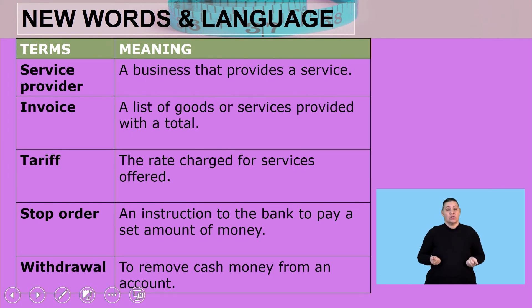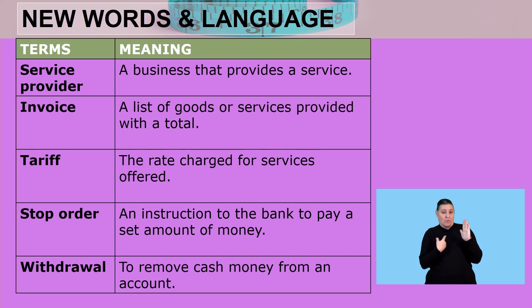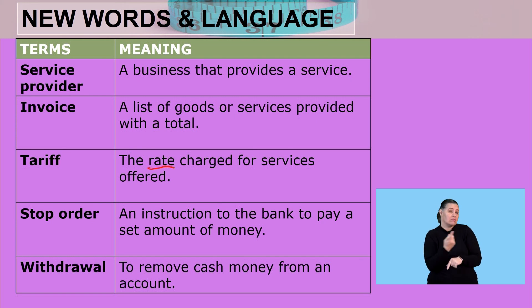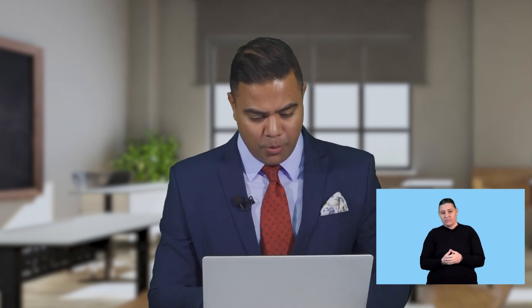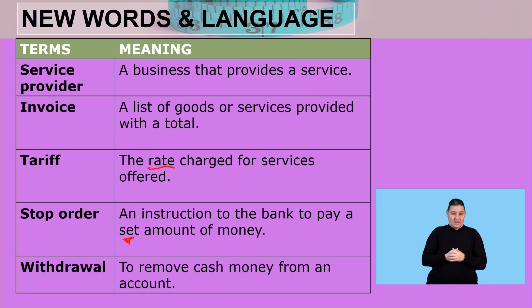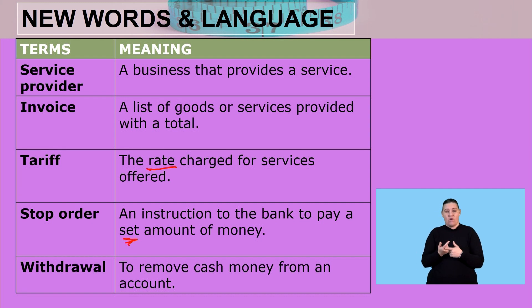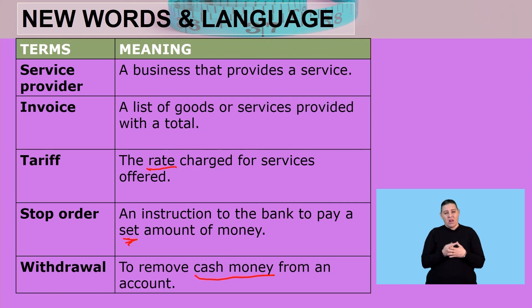Service provider — a business that provides a service. Invoice — a list of goods or services provided with a total. Tariff — the rate charged for services offered, such as a municipal tariff or water tariff. Stop order — an instruction to the bank to pay a set amount of money. And withdrawal — to remove cash from an account, usually at an ATM or the bank.